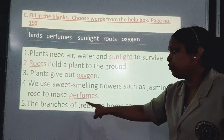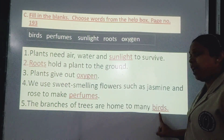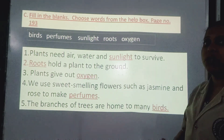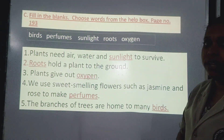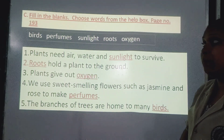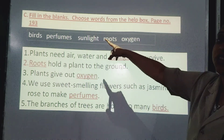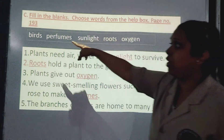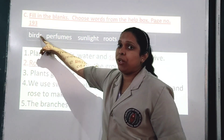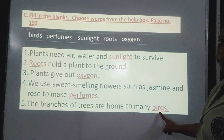Last, number 5: The branches of trees are homes to many — birds. Animals and birds live there, but animal is not in the option. Bird is in the option, so see the spelling of birds and write it here.